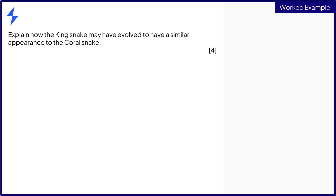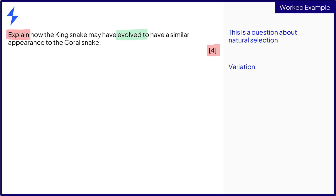When starting to tackle an exam question, we need to note the command word — explain — and the number of marks available. Here there are four marks to be gained, so we need to produce an extended answer. This question is asking us to explain how a process of evolution has occurred. We know that the process by which evolution takes place is natural selection, so we need to apply what we know about this process to the example of the kingsnake given in the question.